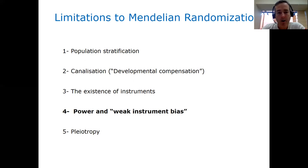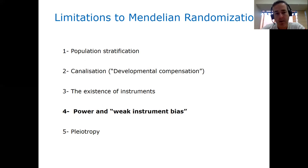Number three is the existence of genetic instruments. For some exposures, we may just not have any known variants that are robustly associated with those exposures. Obviously, as the size of GWAS increases, this limitation is becoming less and less relevant, because with resources like UK Biobank and other large cohorts, GWAS is doing a very good job of identifying robust genetic associations with these exposures.